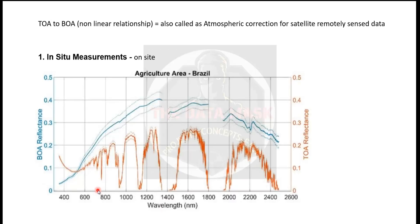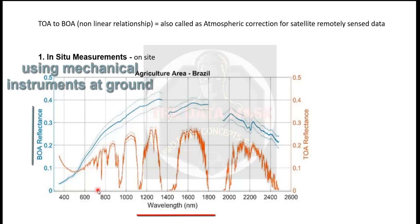One of the accurate measurements is in-situ measurement, that is on-site measurement. In-situ means we will go to the building and we will measure the reflectance at the building. There are mechanical instruments with which you can measure the reflectance of an object. For different wavelengths, for a given solar zenith angle and a given angle of observation, we can measure for different wavelength values what reflectance we are getting just above the object. That is the bottom of the atmospheric reflectance.